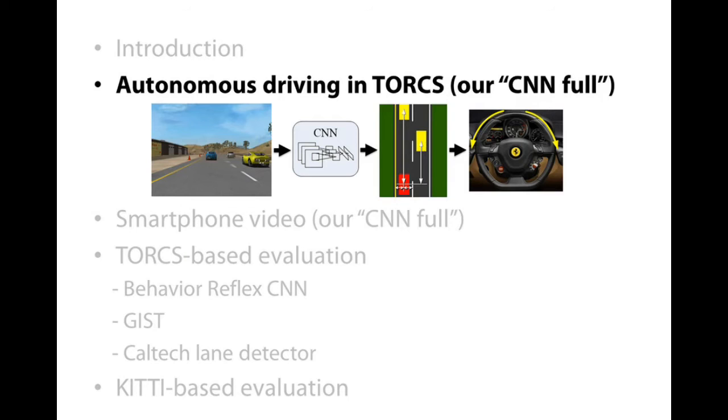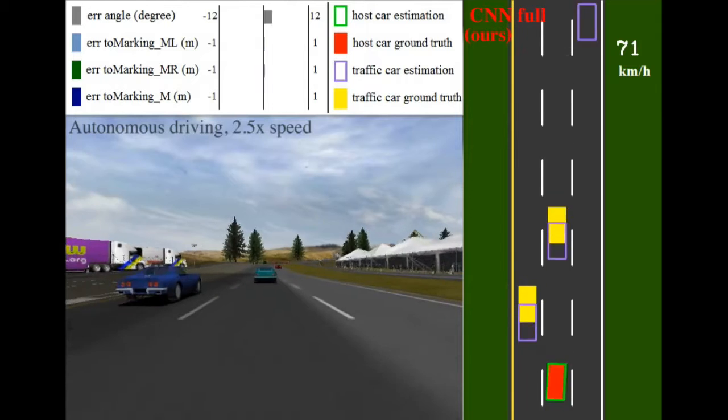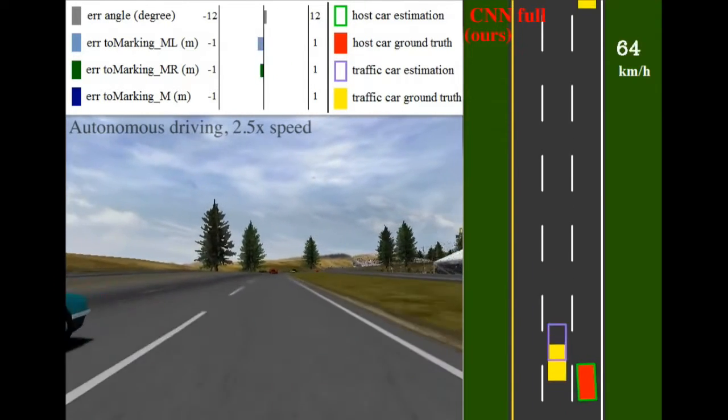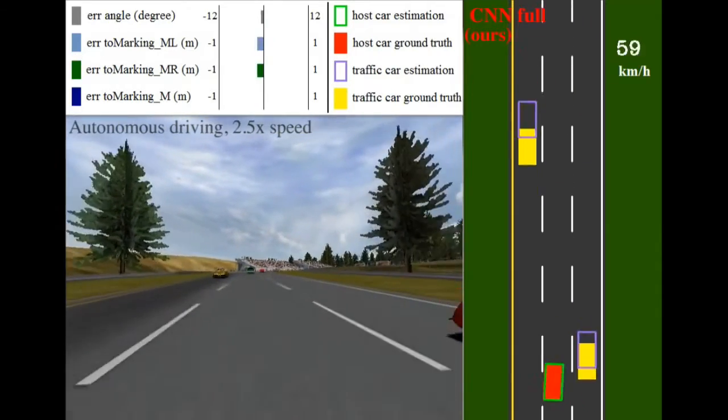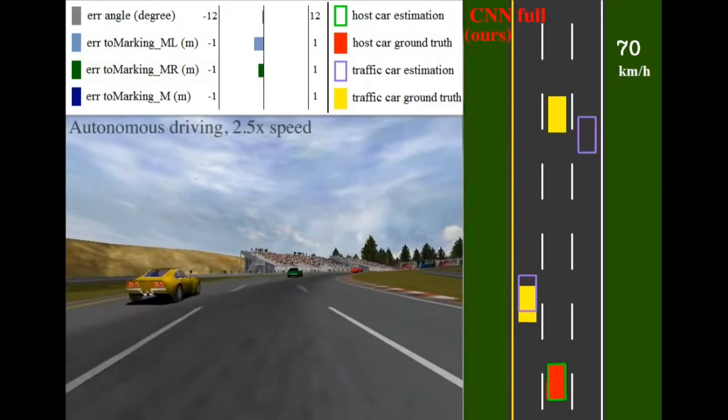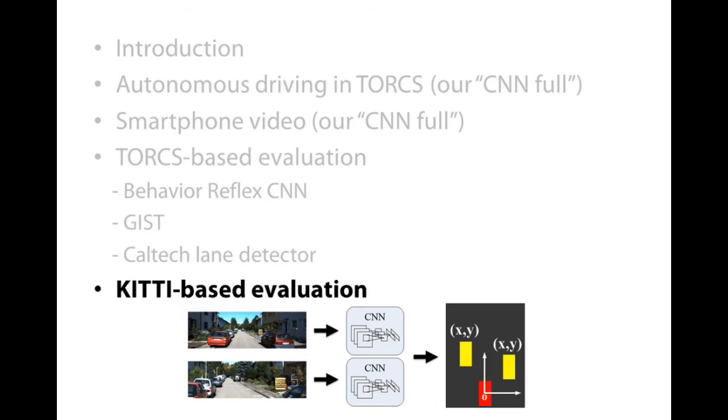Now we show our direct perception based system driving autonomously in a racing game TORCS. On this three-lane track, the autonomous driving host car overtakes a series of traffic cars by switching lanes.